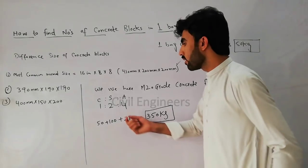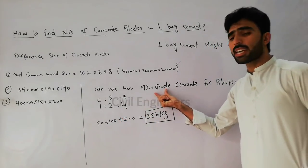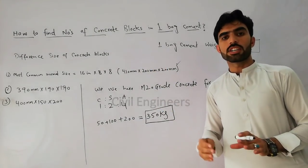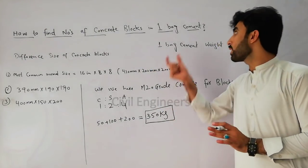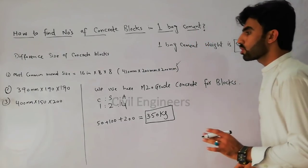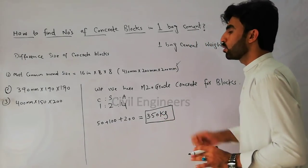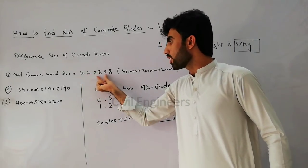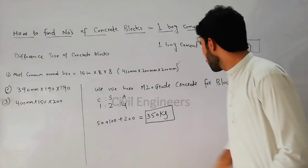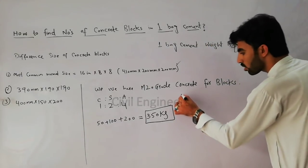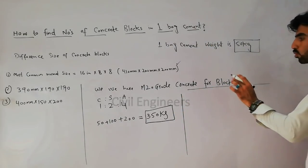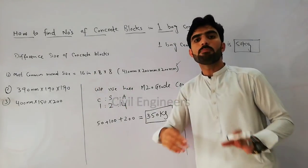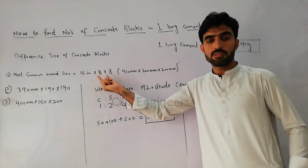Now suppose you have to find the numbers of blocks for this size 16 inch by 8 inch by 8 inch. You can find number of concrete blocks with this formula. First, you take this block and weigh it to find the weight of one block.